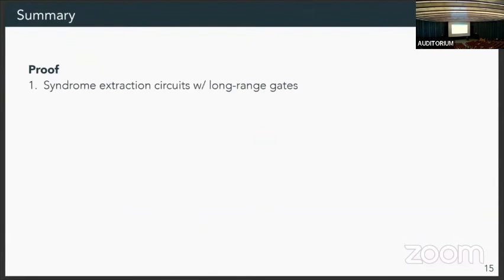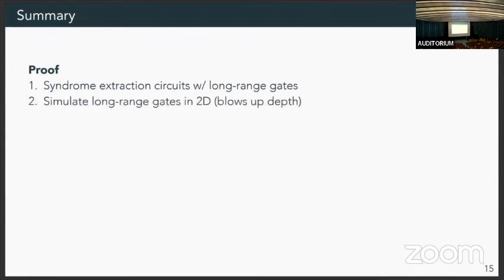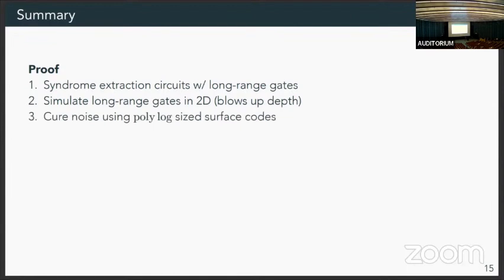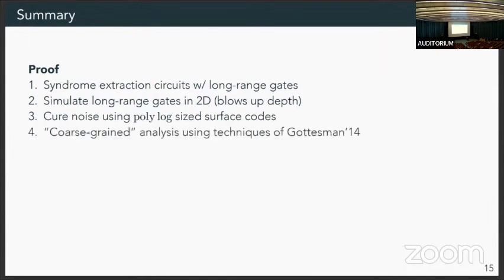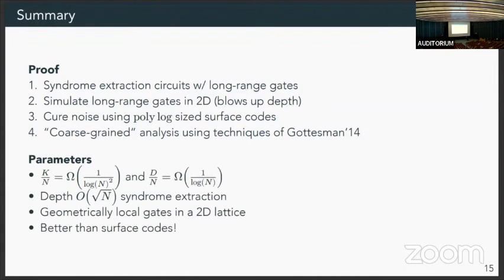So just to summarize, we built these syndrome extraction circuits that required the long-range gates. We embedded them, which incurred a blow-up. So we constructed circuits that were optimal according to the DPT bound. And then we cured this noise that we introduced by having such deep circuits by concatenating with a small-sized surface code. And the analysis itself is a coarse-grained approach using some techniques of Gottesman from 2014. And the one thing I want to say about this is, to my knowledge, this is the first time that surface code has been beaten in the geometrically local setting. So that's pretty nice.